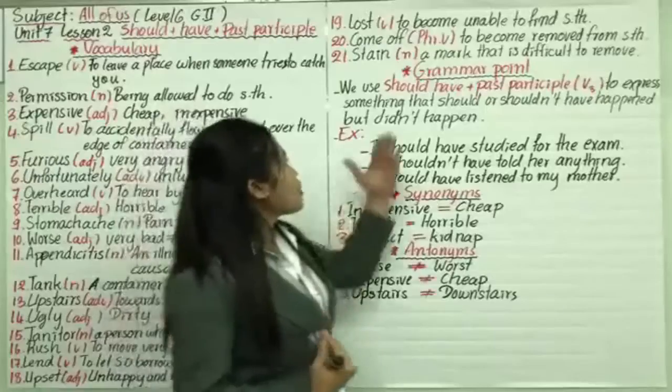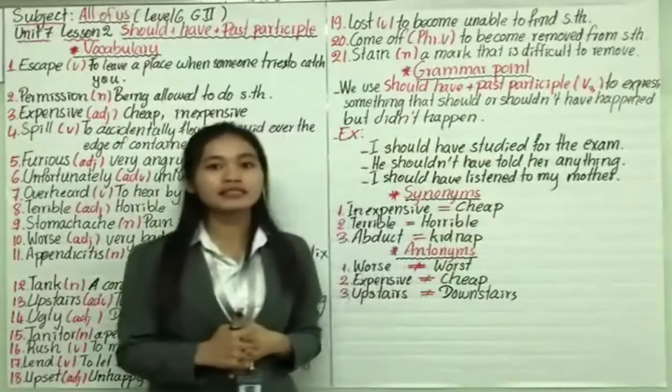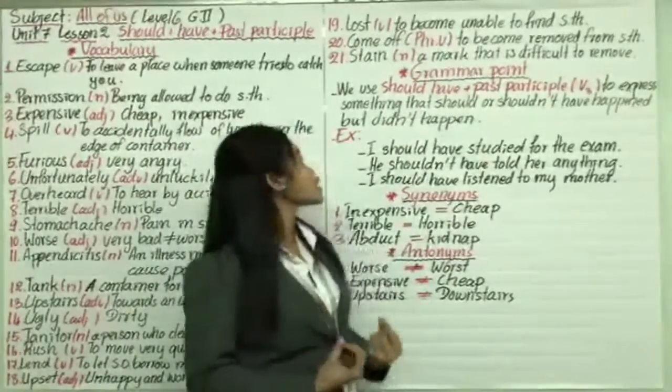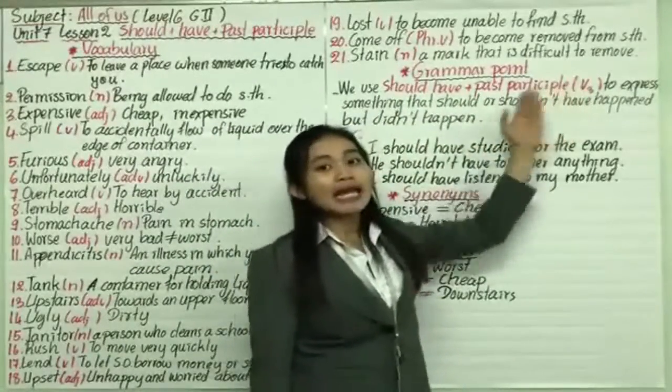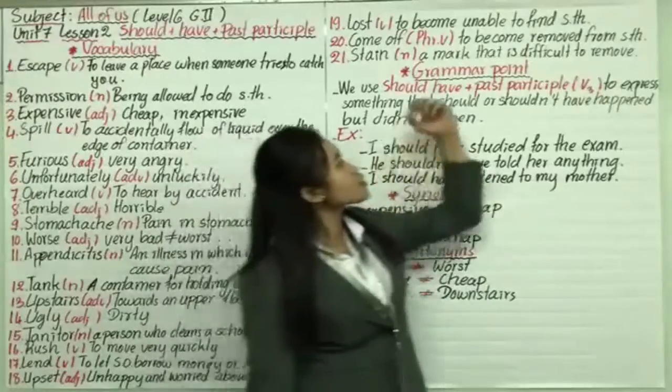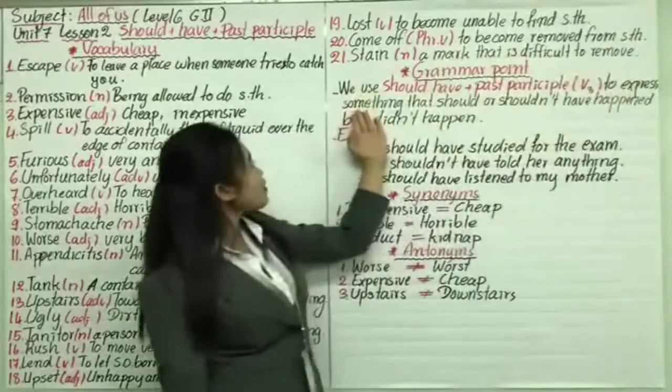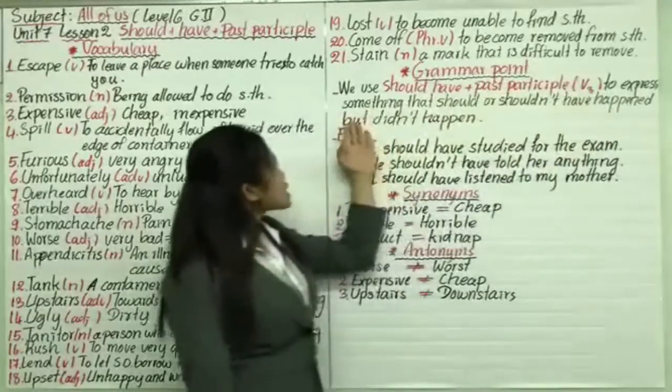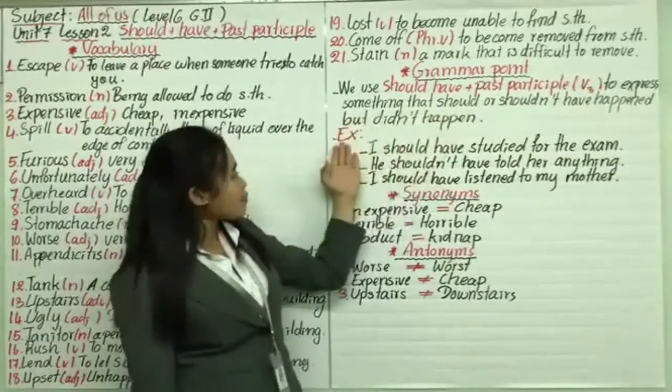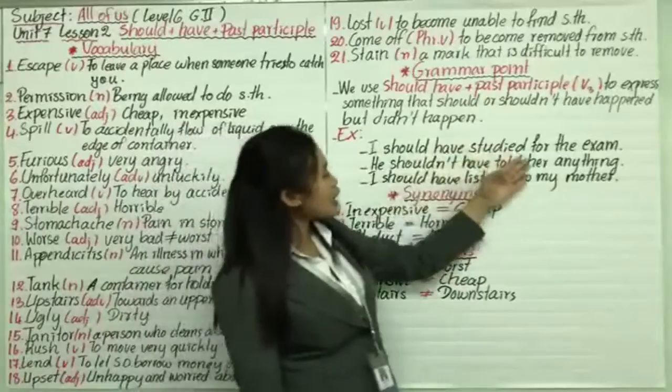And about the grammar point in this lesson, it is mainly talking about should have plus past participle, we call verb three. In this form, we use it to express something that should or should not have happened but didn't happen.